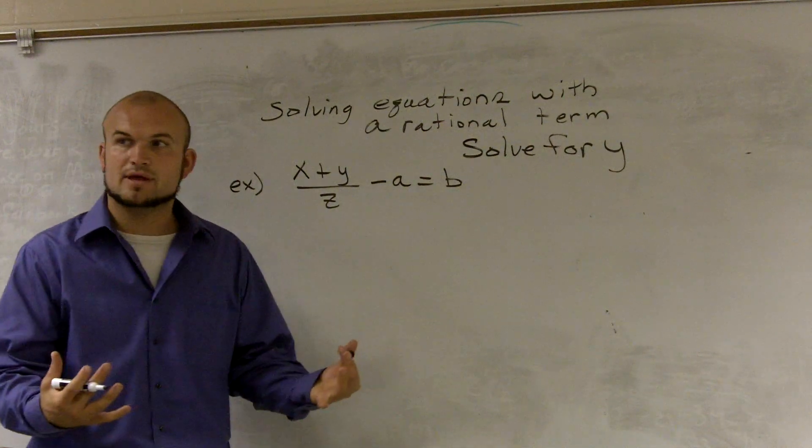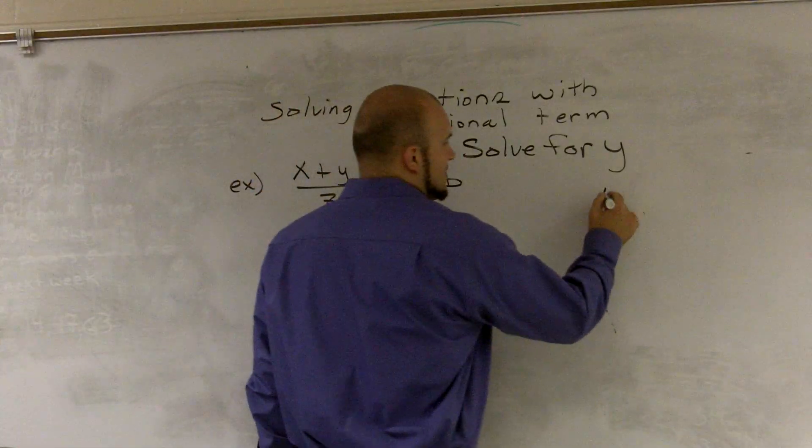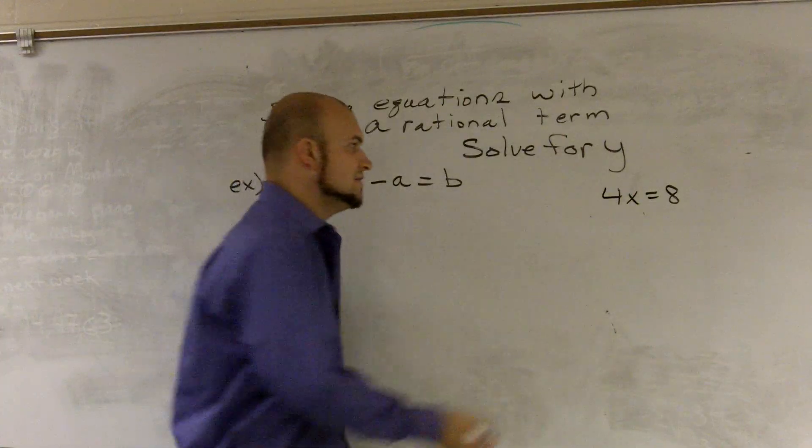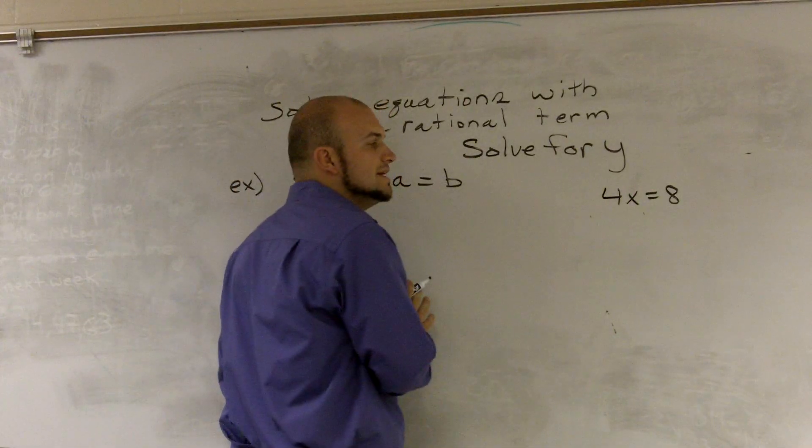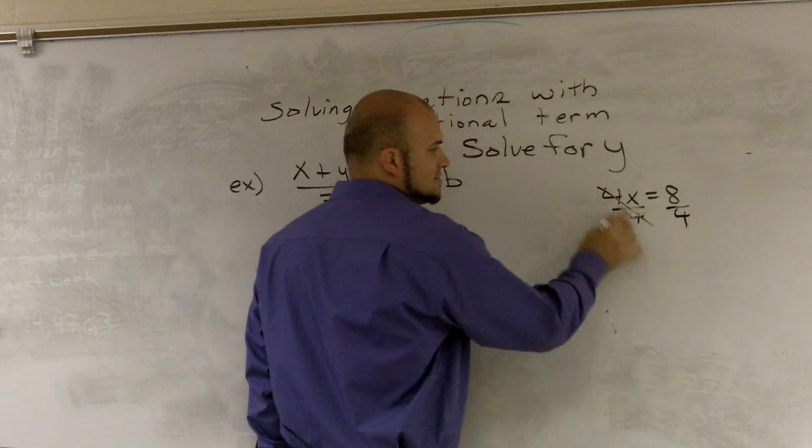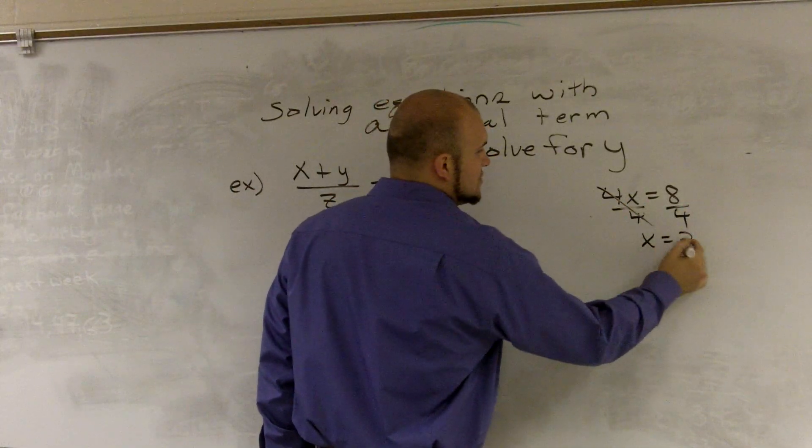And something that's very common with a lot of people is they know this problem: 4x equals 8. Everybody's very familiar with solving this. Because you know, to do the inverse operation, you divide by 4. That cancels out to become a 1. You're left with x equals 2.